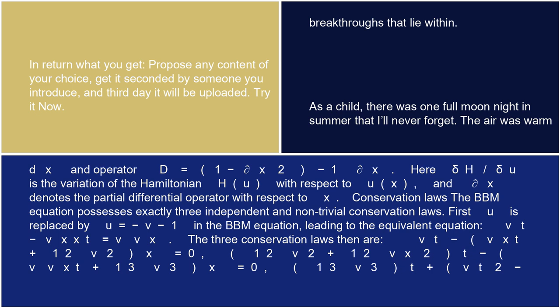Conservation laws: The BBM equation possesses exactly three independent and non-trivial conservation laws. First, u is replaced by u = -v - 1 in the BBM equation, leading to the equivalent equation vt - vxxt = v·vx.